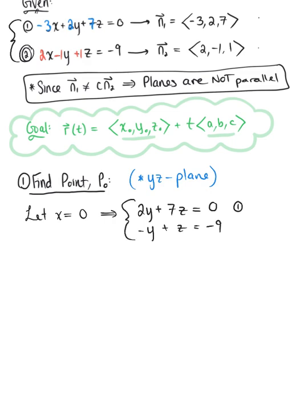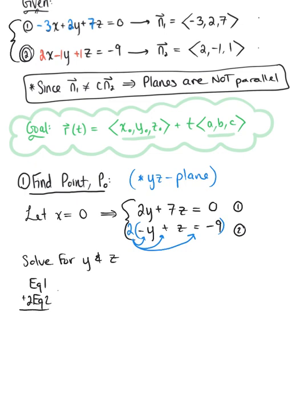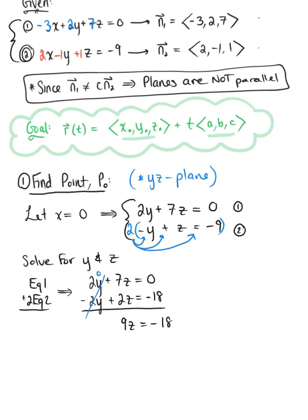So this is our resulting system — equation one and equation two — and we want to use this system to solve for y and z. Looking at our coefficients, we'll multiply our second equation by two and then add the two equations together to cancel one of our variables. So equation one plus two times equation two: we still have 2y plus 7z equals zero, and the second equation is now minus 2y plus 2z is equal to negative 18. Those y variables cancel, leaving us with 9z is equal to negative 18, and dividing both sides by 9, we see that z is negative 2.